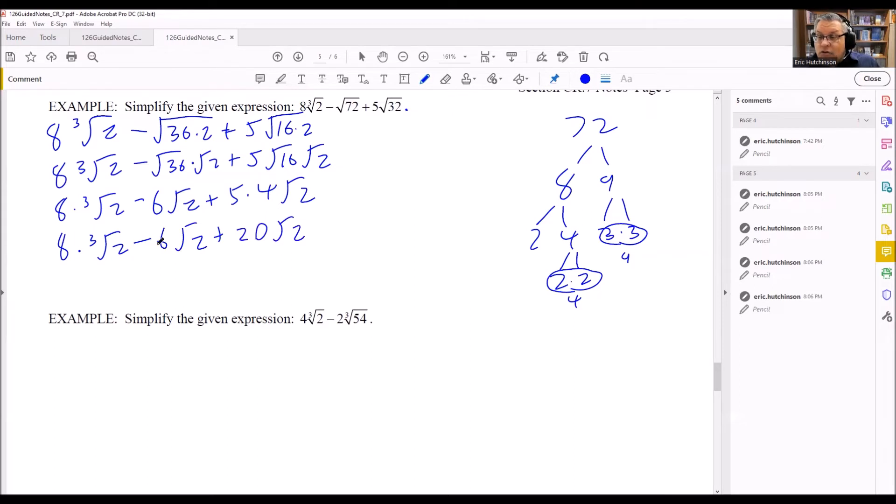So I have minus 6 square root of 2 plus 20 square root of 2. The last two are like terms because they're both square roots. But I cannot do anything with the first one, the 8 cube root. That's a cube root and I have a square root. So although all of these have a 2 inside, they're not like terms. They have to have the same index and the number inside has to also be the same. So I can do 20 minus 6, that's 14, and I'll have 14 square root of 2.